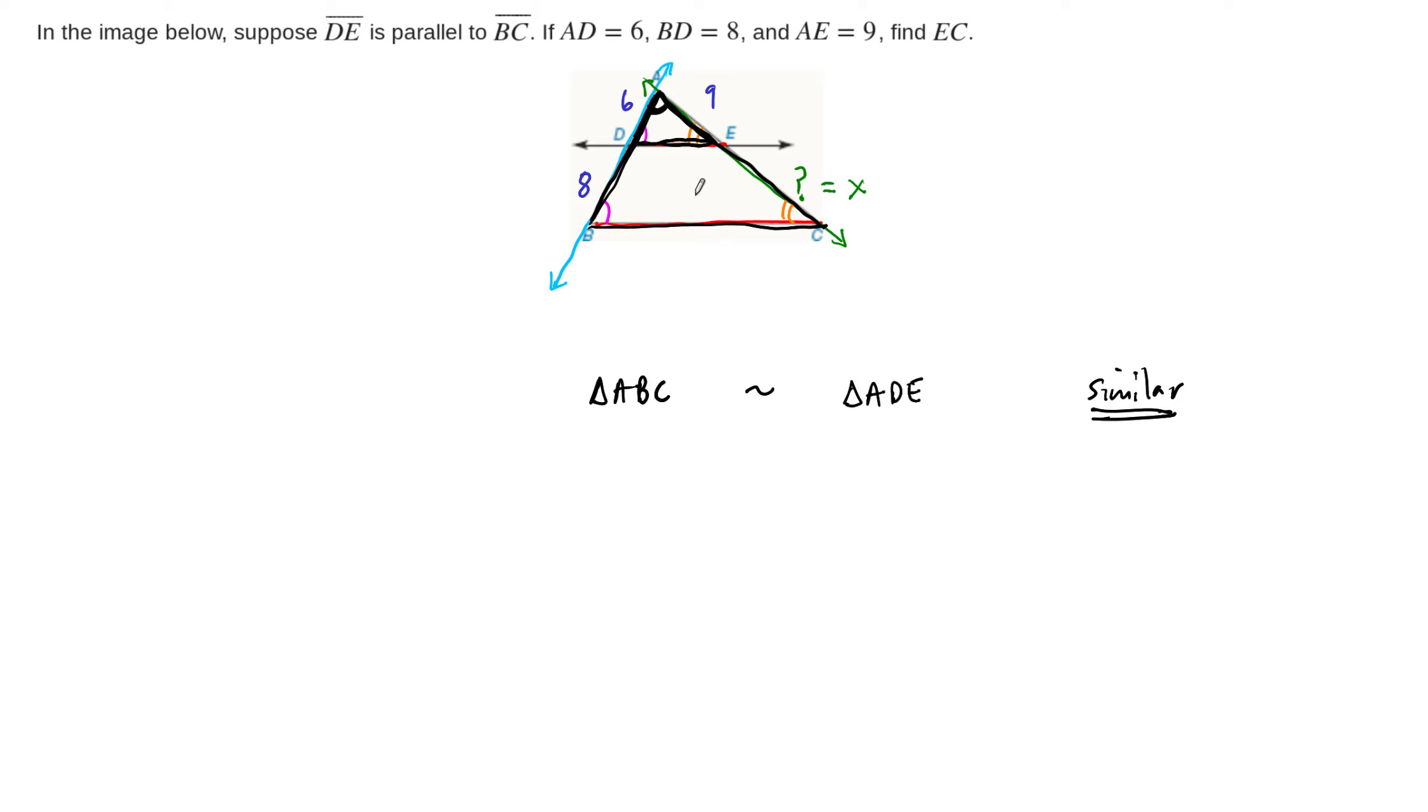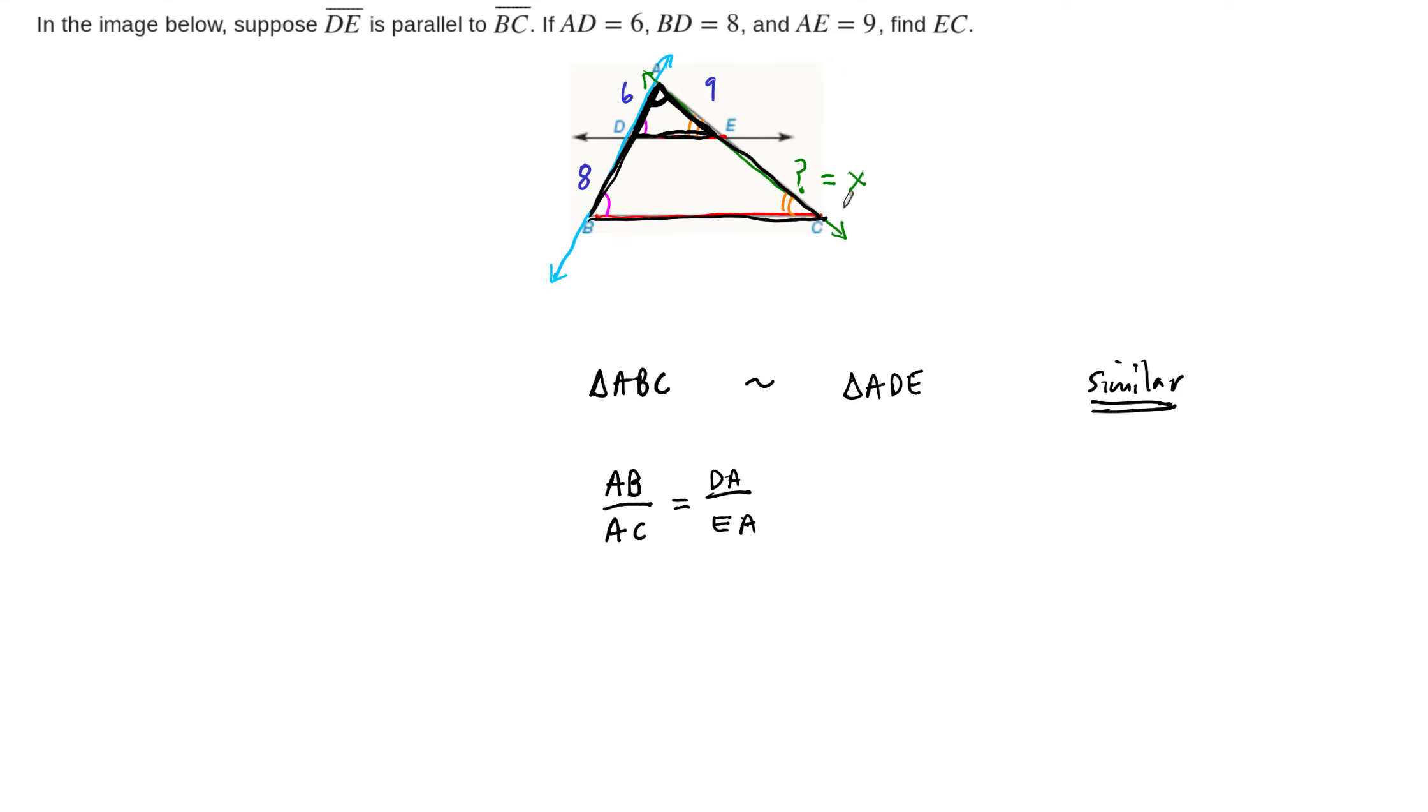Make sure you understand why these triangles are similar. I didn't write out a proof of this, but you could write out a proof that these two triangles are similar to one another. Once we know they're similar, then we know that corresponding sides have the same ratios to one another. So because these are similar, what we know then is that side length AB is to side length AC. So these are the ratios of the sides of the two larger triangles. As side length DA is to side length EA.